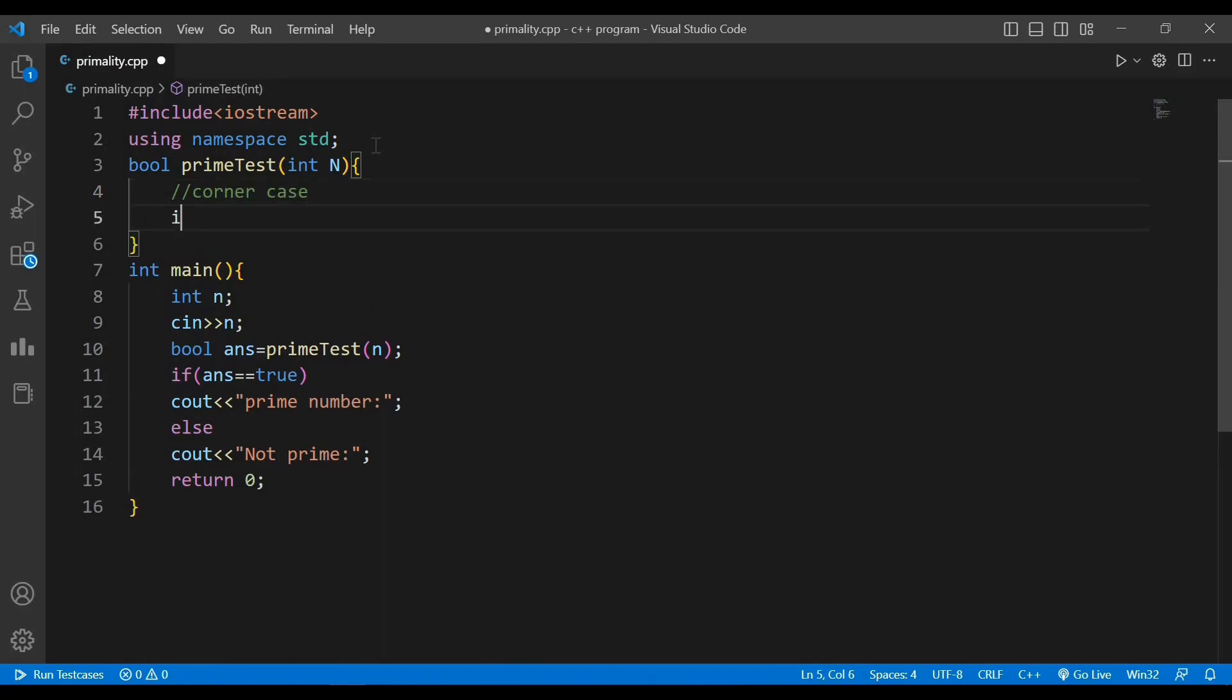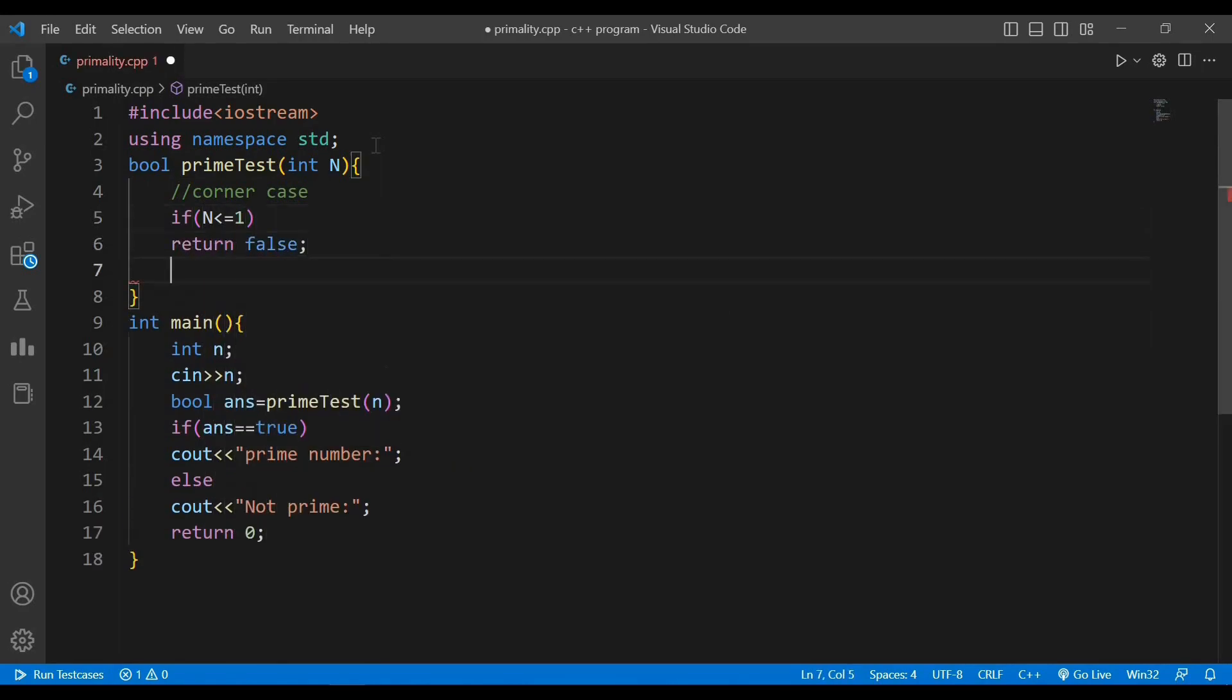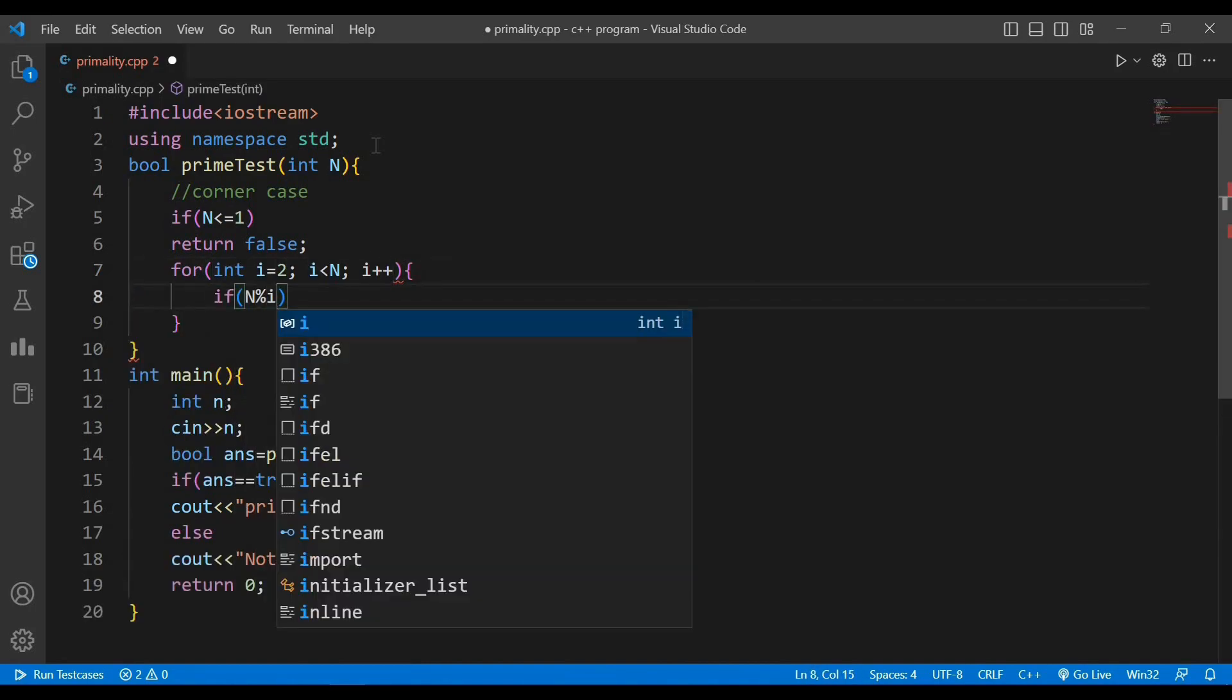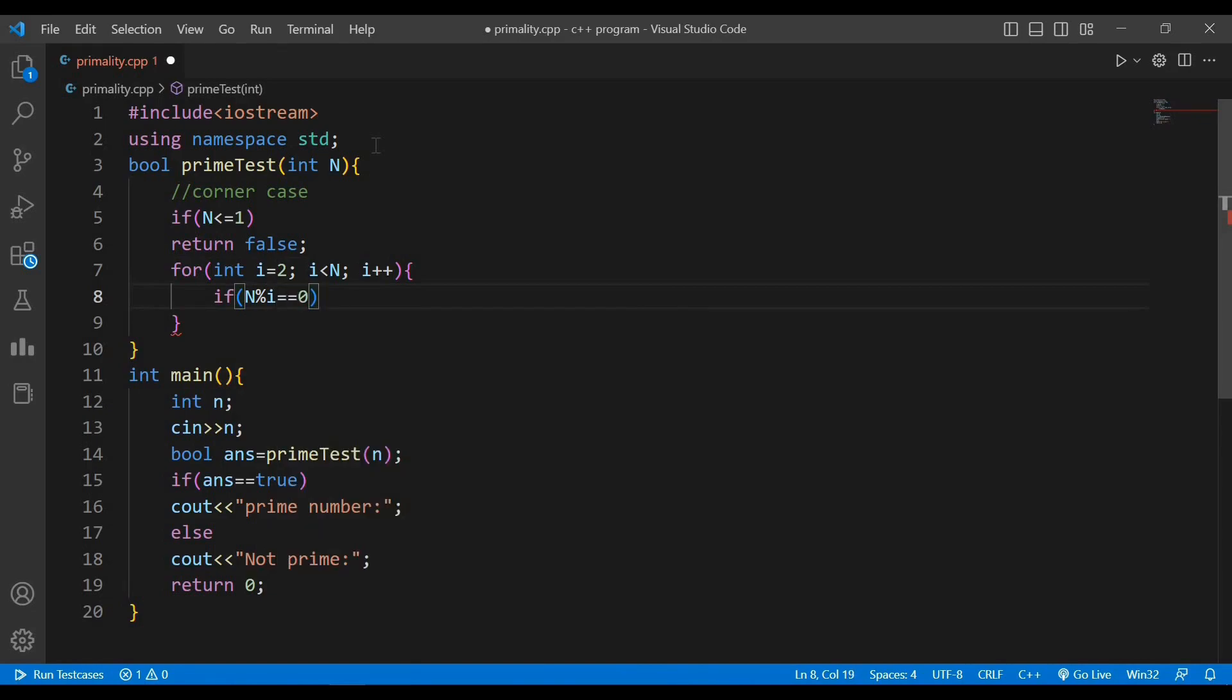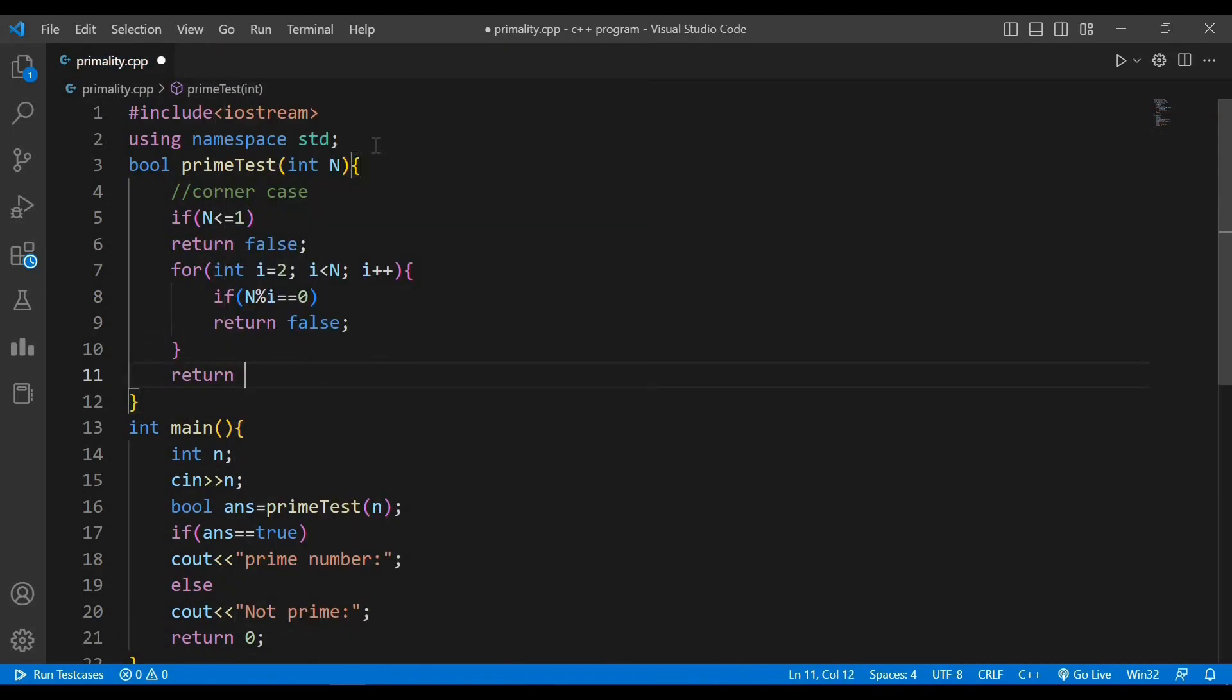We don't want to check for values less than or equal to 1, because the smallest prime number is 2. Now loop from 2 to n-1. If i divides n, then return false. And return true if the condition is not satisfied.